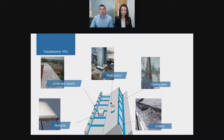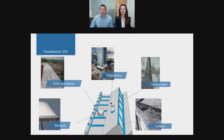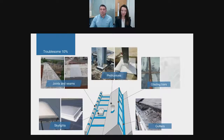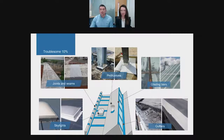In our decades of experience we have found that 90 percent of roof problems are actually found in only 10 percent of the areas. If you think of a flat roof with air conditioning ducting coming through — the weak point is the duct. The troublesome 10 percent includes skylights, joints and seams, protrusions, glazing bars, and gutters. We've included some before and after examples of the damage these areas can experience and how they look after being protected with a microporous membrane.